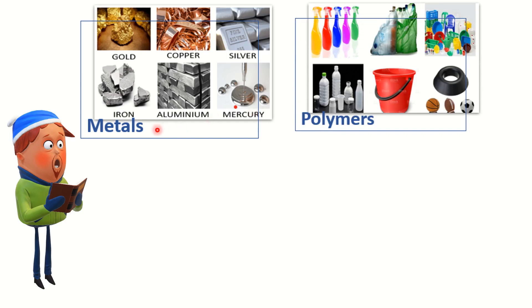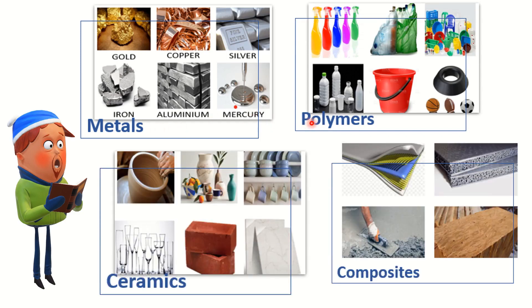They are metals, polymers, ceramics, and composites. Some basic examples: for metals — gold, copper, silver, iron, aluminum, and mercury. For polymers — all the plastic materials like plastic covers, bottles, chairs, and all those things. Ceramics — glasses, tiles, clay materials, ceramic teacups. For composites — concrete, wood, bone and other materials. Basically, a composite is a mixture of two or more materials — maybe metal, ceramic, and polymer.